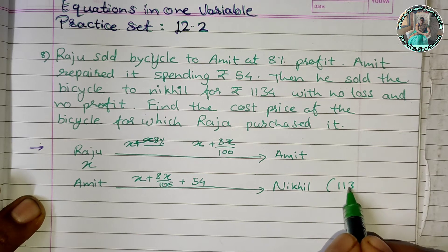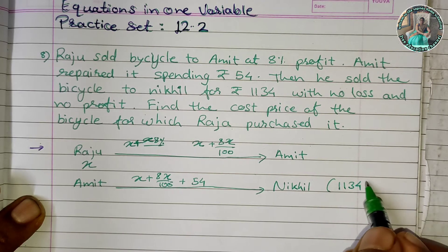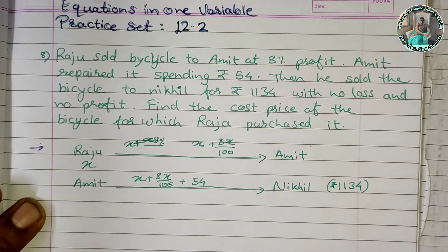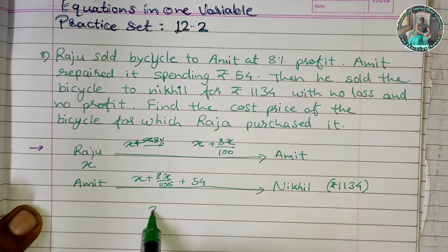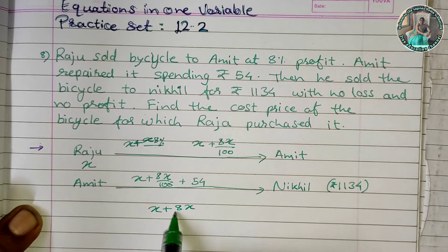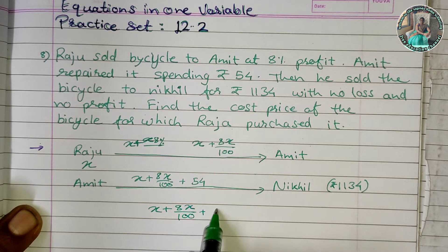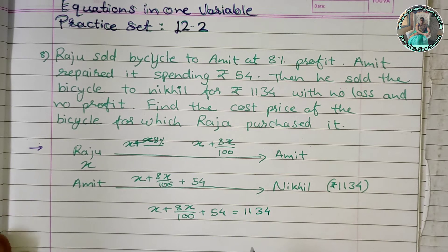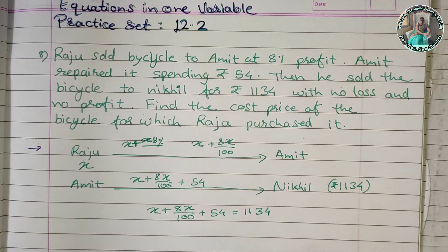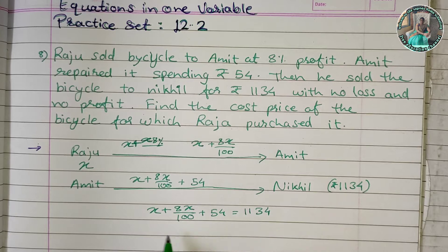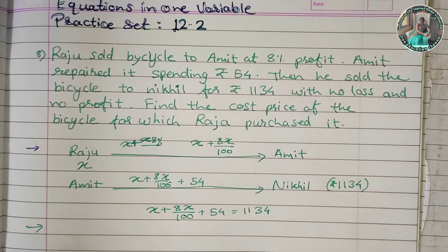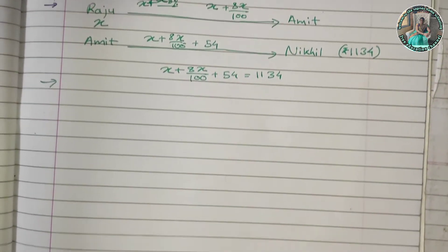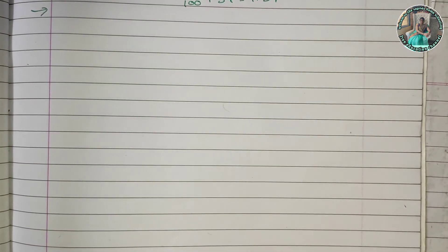The equation is x plus 8x upon 100 plus 54 is equal to 1134. This is our equation. Now we have to solve this equation.